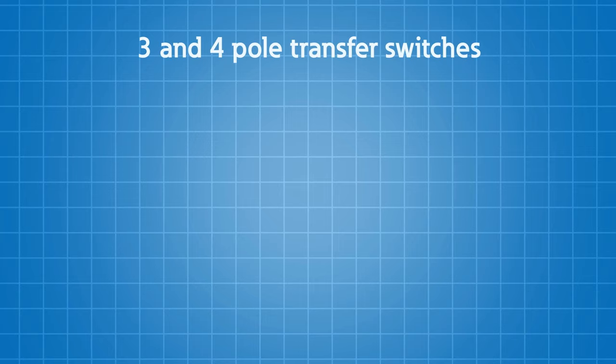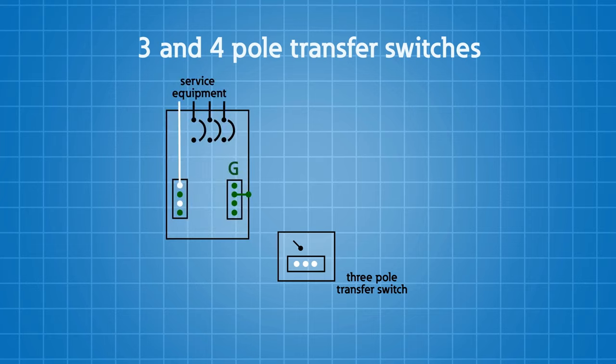So let's just take a quick look at an example system where you would have a transfer switch, and obviously you have your utility and your service panel. Off of your service panel, you'll have your grounding electrode. Your grounding electrode conductor will come up to your neutral bar, and then you'll have a bonding strap between your neutral bar and your equipment grounding bar.